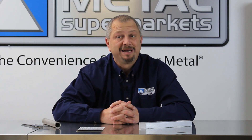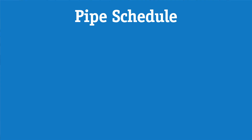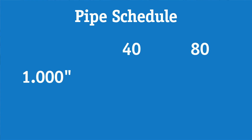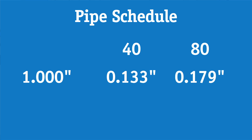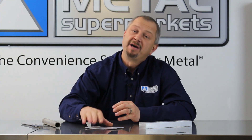As the schedule number increases, the thicker the pipe wall is, and a different schedule number for the same nominal pipe size will have a thicker wall. For example, two of the most common pipe schedules are 40 and 80. A 1-inch schedule 40 has a wall thickness of 0.133 inches, while 1-inch schedule 80 has a wall thickness of 0.179 inches. The best way to see the relationship between pipe size, schedules, and wall thicknesses is to stop by your local Metal Supermarkets and pick up a conversion chart.